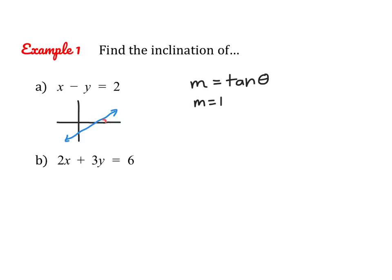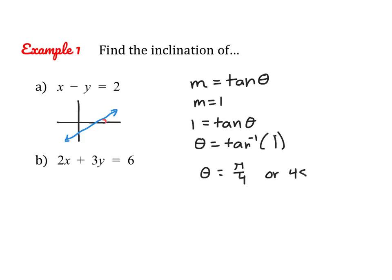So I can plug that into our formula: 1 equals the tangent of theta, which means theta equals the arc tangent of 1. We can do this either in degrees or radians. The arc tangent of 1 is pi over 4 radians, or 45 degrees. If I look at our line, this angle does make sense — we definitely have an acute angle here, so these answers will work.